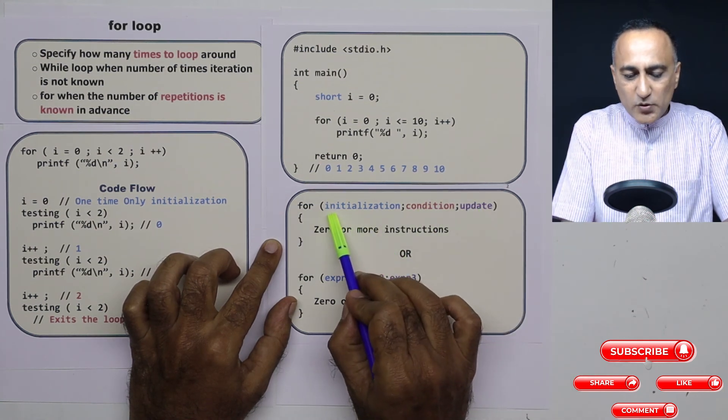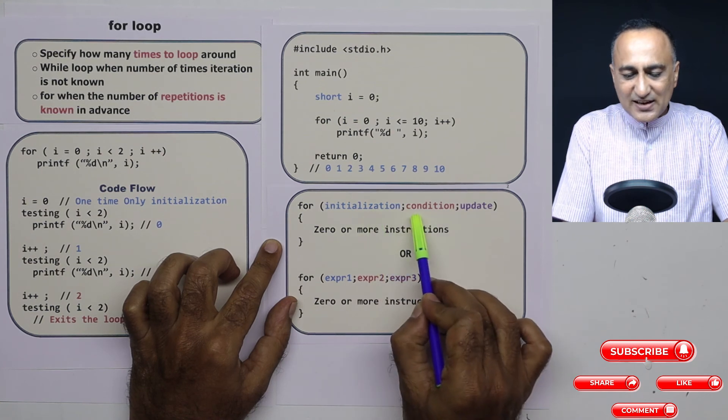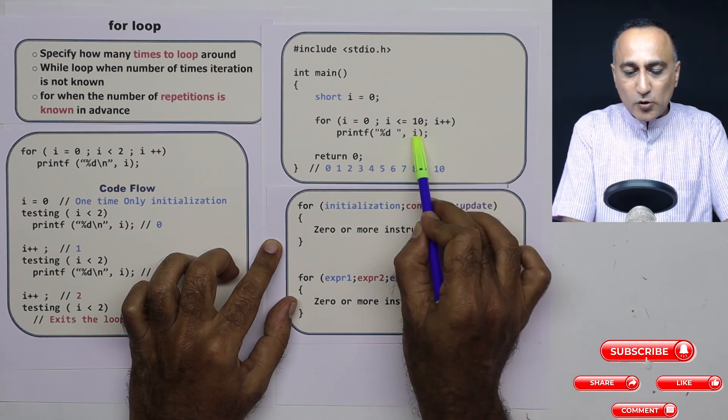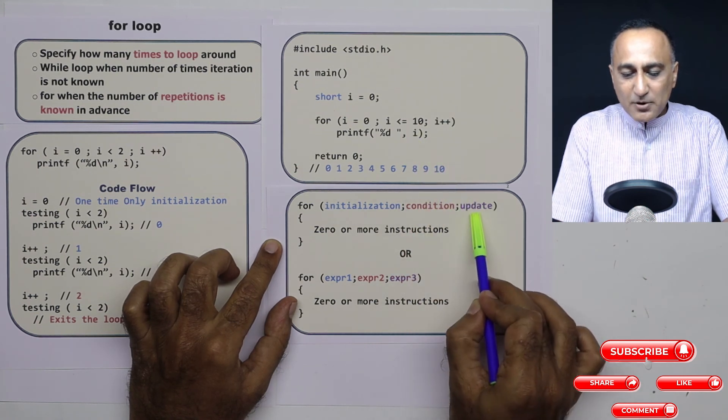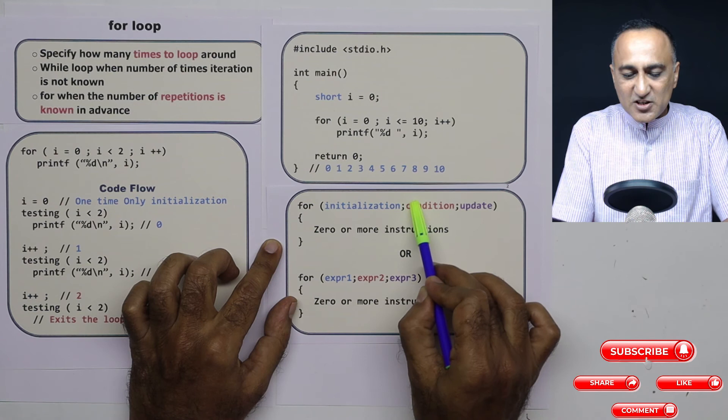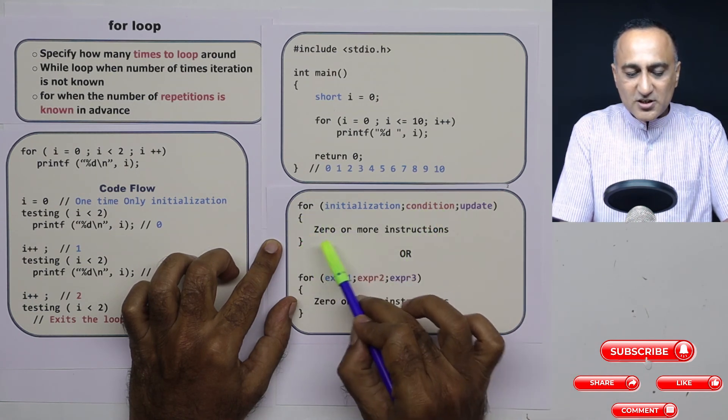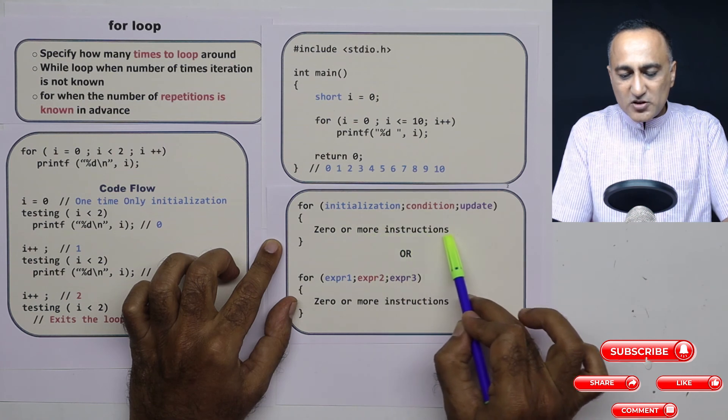But generally, what we do is we do the initialization here, the condition testing here, the change increment or decrement of the control variable. Control variable is i, because based on the value of i, this condition is going to be true or false. So here, this is a block of instructions going to get executed zero or more times.